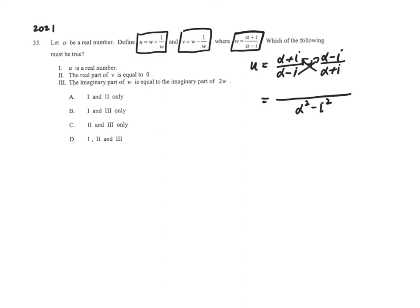The only difference you should know is the middle term - negative 2 alpha i and positive 2 alpha i. When they add up, they become 0. That means you have 2 alpha squared adding 2 i squared.